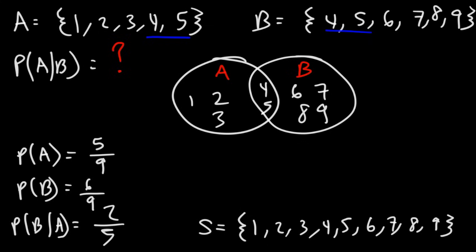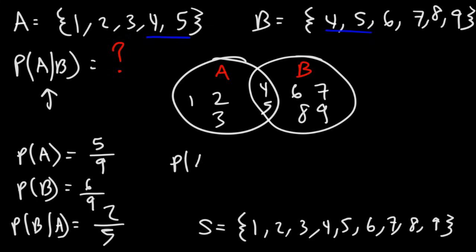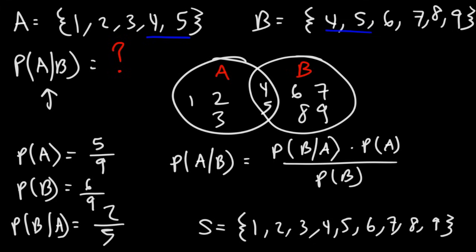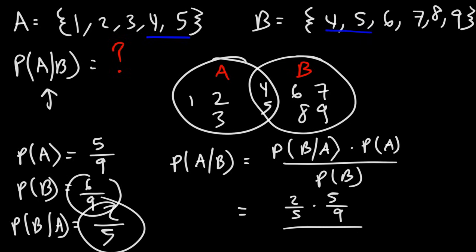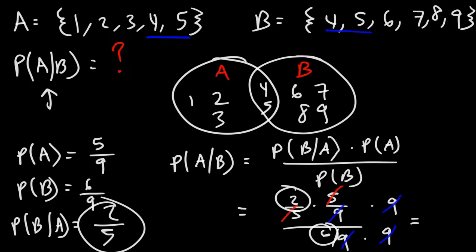So now, with this information, we can calculate the conditional probability. The probability that A will occur given that B has already occurred equals P(B|A) times P(A) over P(B). That's 2 over 5 times 5 over 9, divided by 6 over 9. We can cancel the 5s, and multiplying top and bottom by 9 cancels the 9s, leaving us with 2 over 6, which reduces to 1 over 3. So the probability that A will occur given that B has already occurred is 1 out of 3.